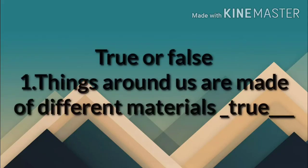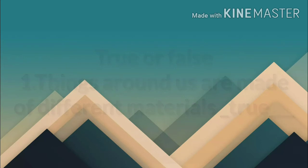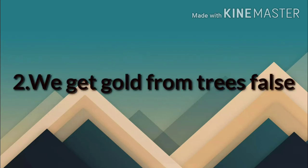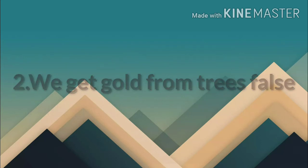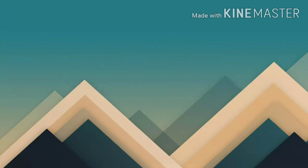Let's start our true or false. First: Things around us are made of different materials. True — yes, they are made from different materials, so the statement is true. Second: We get gold from trees. False — we get gold from the earth.